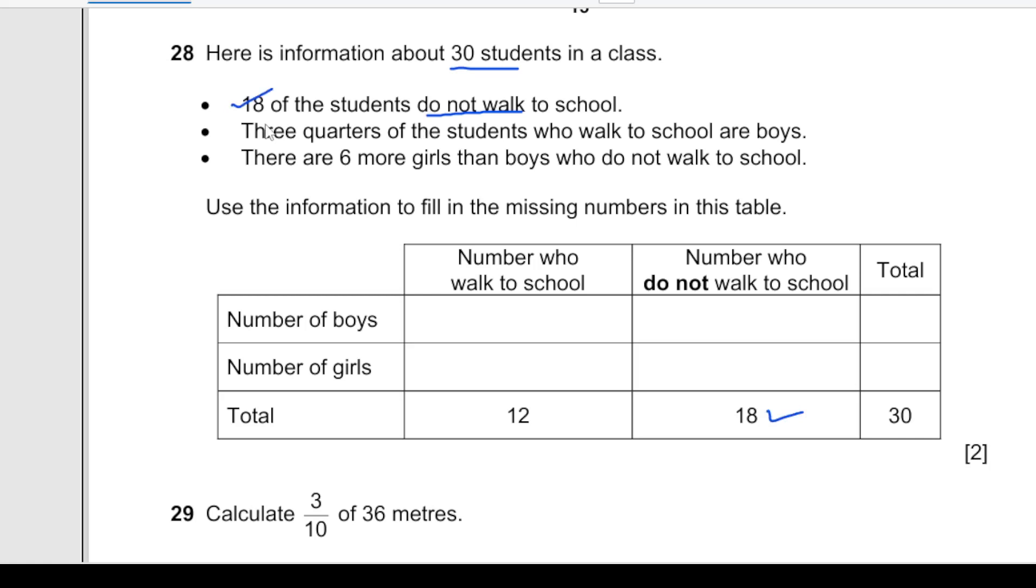Three quarters of the students who walk to school are boys. The total number of students who walk to school is 12. So 3/4 of 12 - 12 divided by 4 times 3 - is 9.